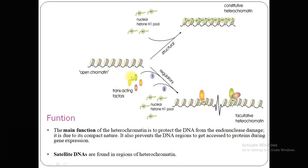As you can see in this diagram, this is open chromatin, and structurally heterochromatin binds the nuclear histone pool. In the regulatory region, transcription factors and the nuclear histone protein H1 pool bind with these regions as facultative heterochromatin. The functions of heterochromatin include protecting DNA from endonuclease damage due to the compact nature of the chromatin. It also prevents DNA regions from excess protein access during gene expression. Satellite DNA is found in the regions of heterochromatin.